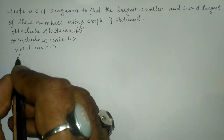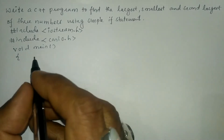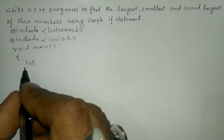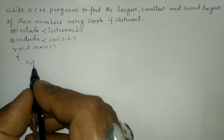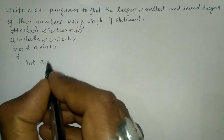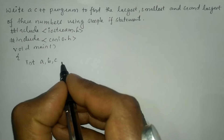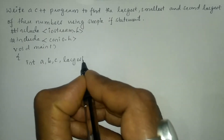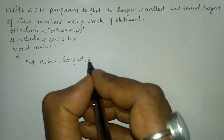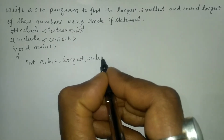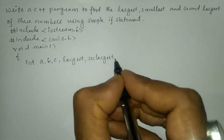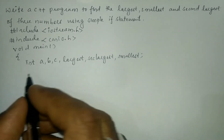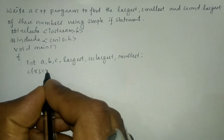In the declaration section I'm going to declare all the necessary variables to be used in the program using the data type int. I'm going to take three variables: a, b, c, and then one more variable called largest, then sec_largest (that is second largest), and then smallest, followed by a semicolon.